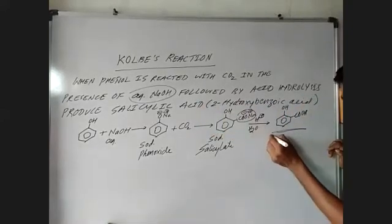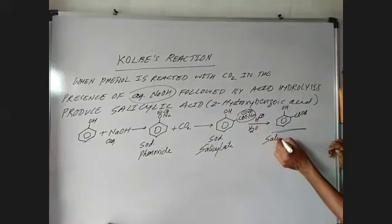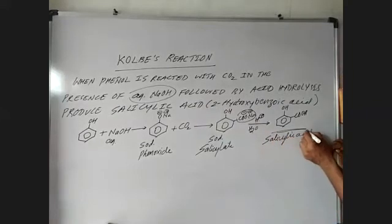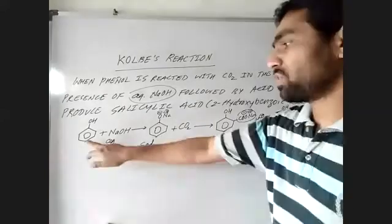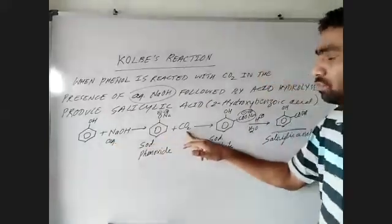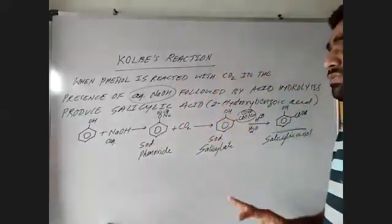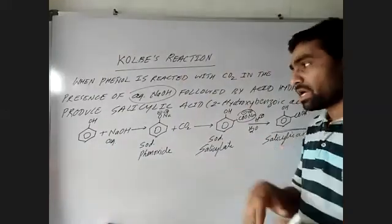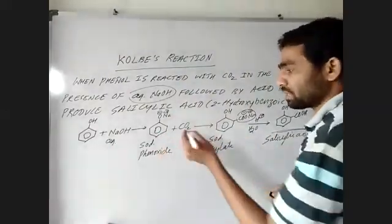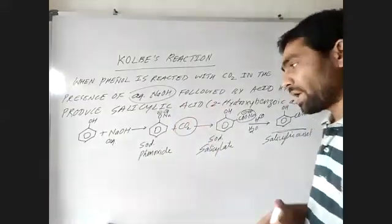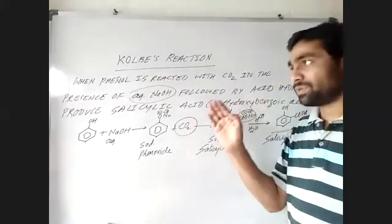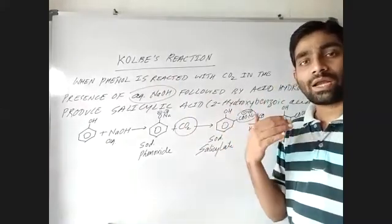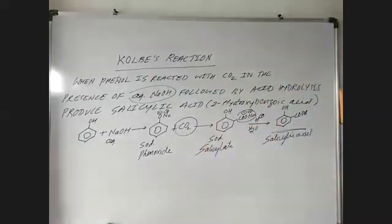This is called salicylic acid. That's all — this is Kolbe's reaction, in which we use phenol, aqueous NaOH, and CO₂. This is the difference from the Reimer-Tiemann reaction: in the Reimer-Tiemann reaction we use chloroform and CCl₄, while Kolbe's reaction uses carbon dioxide. That's the only difference between the two reactions.